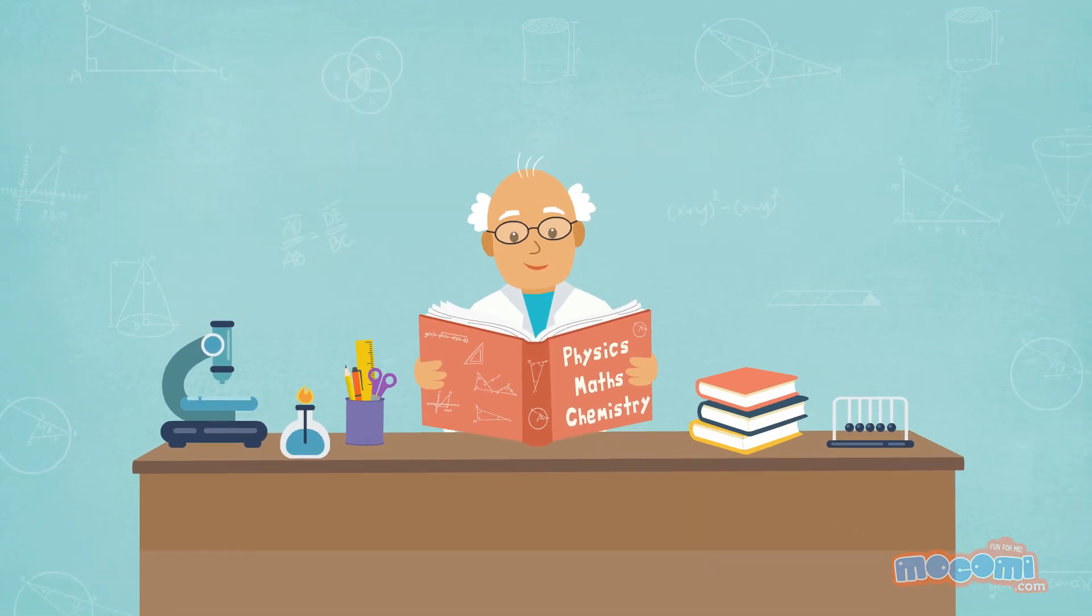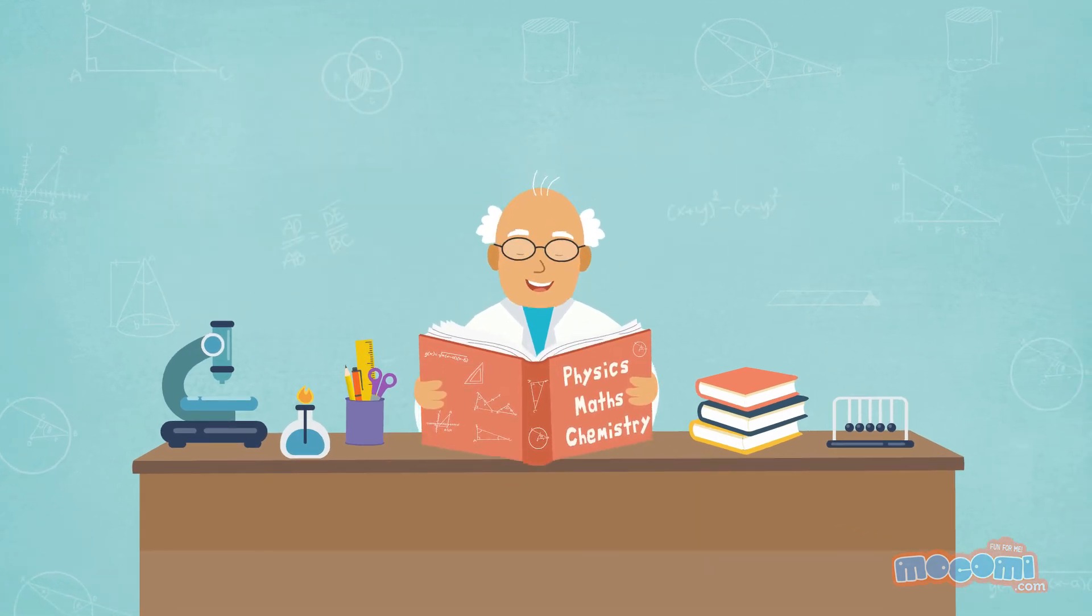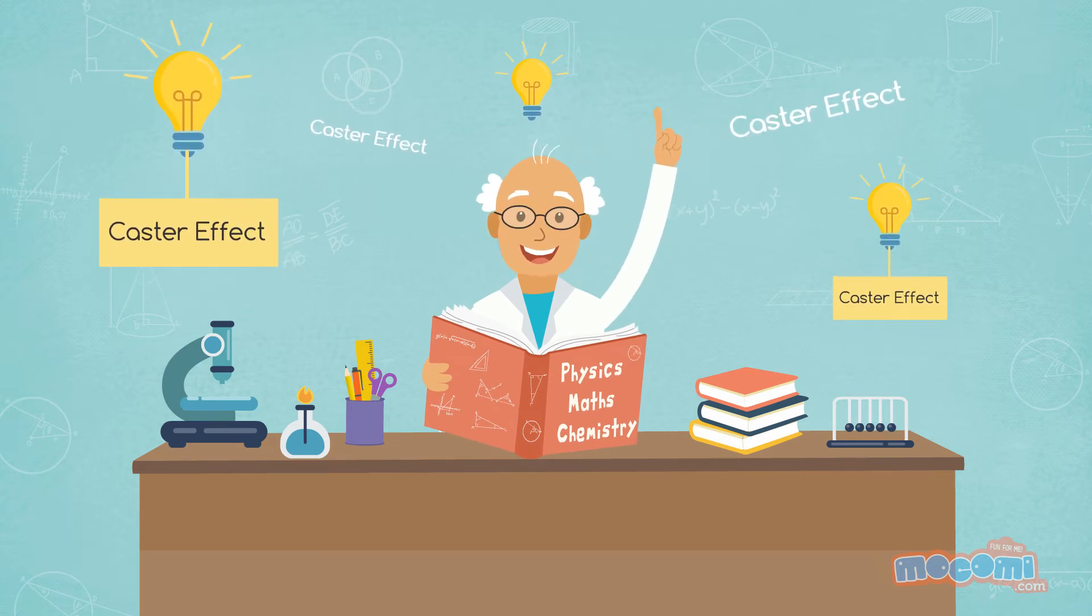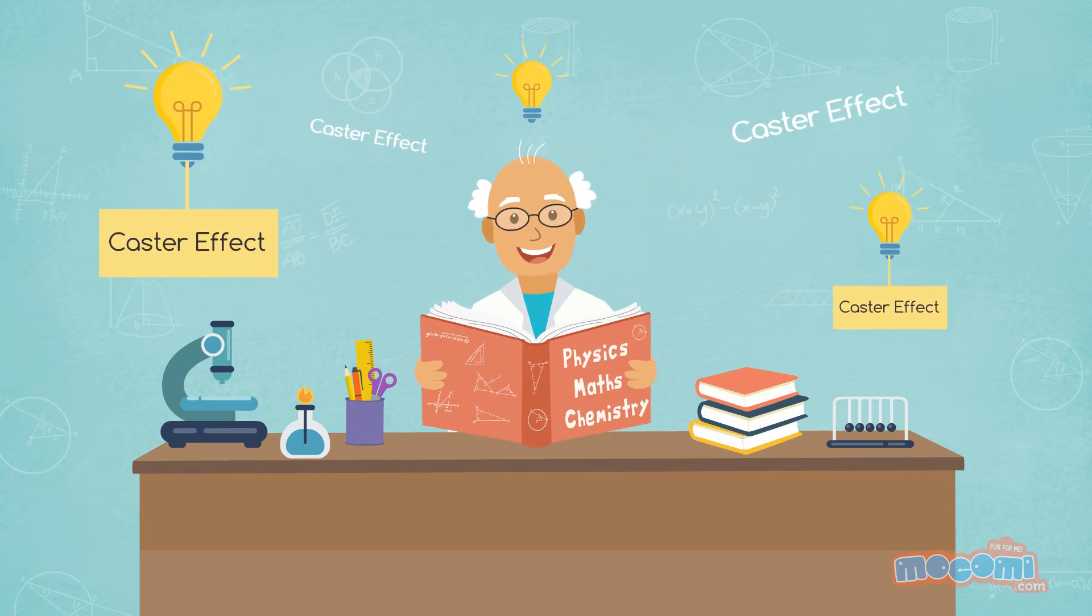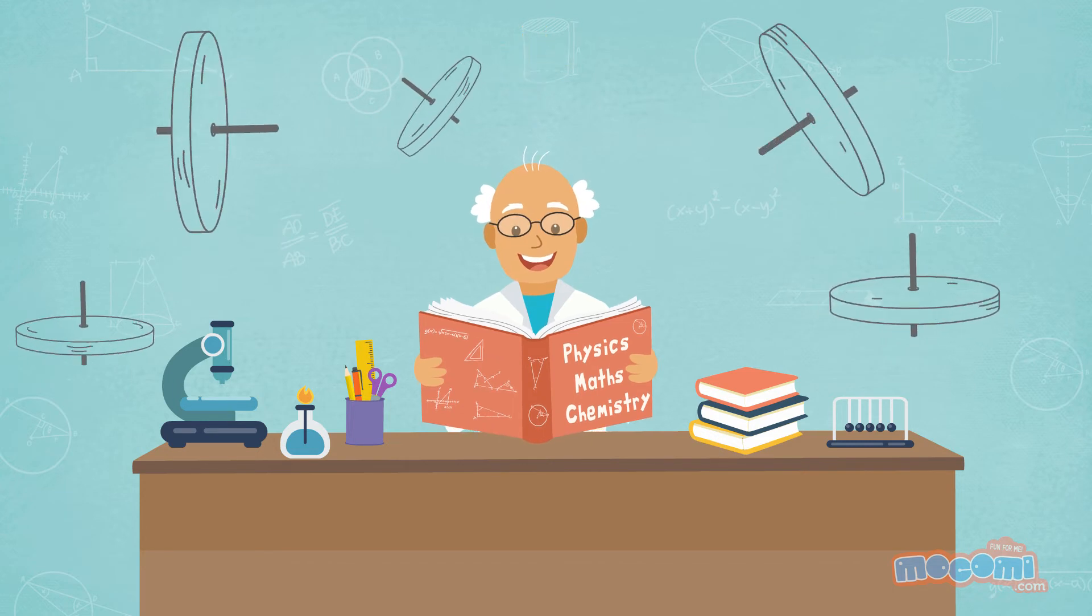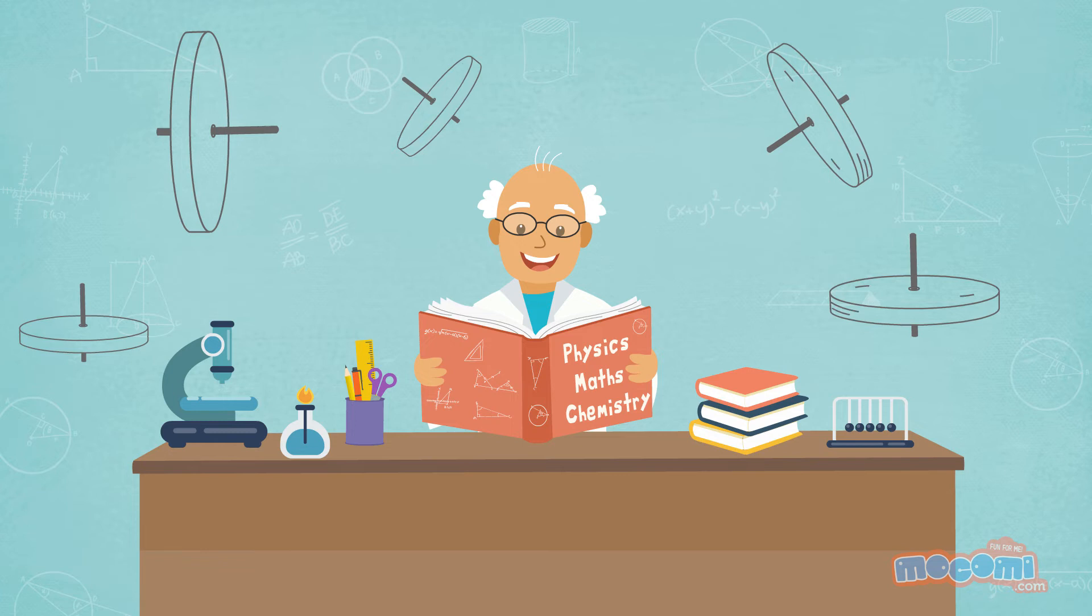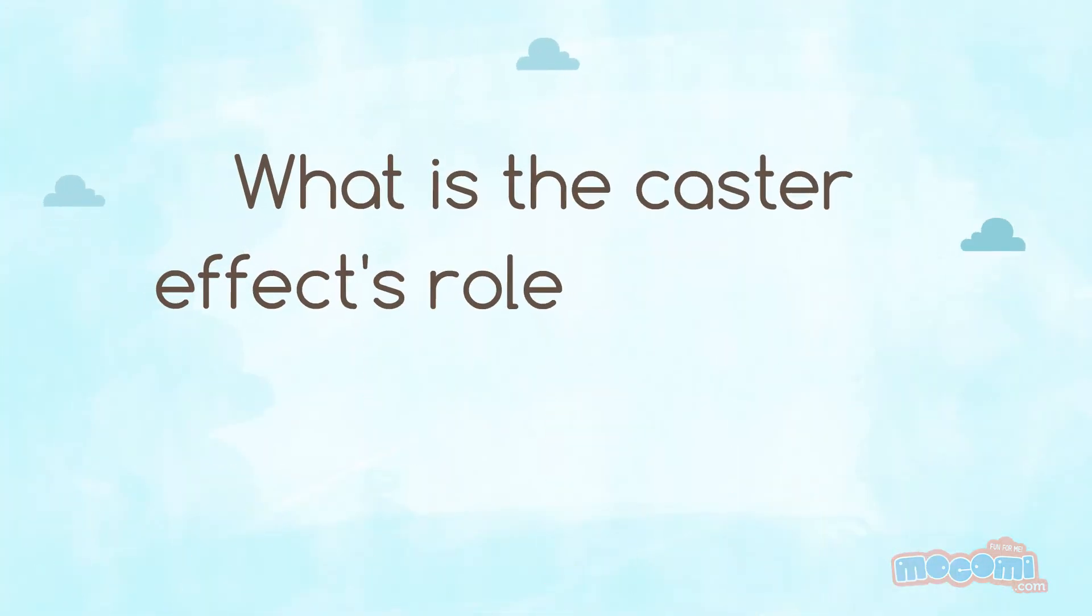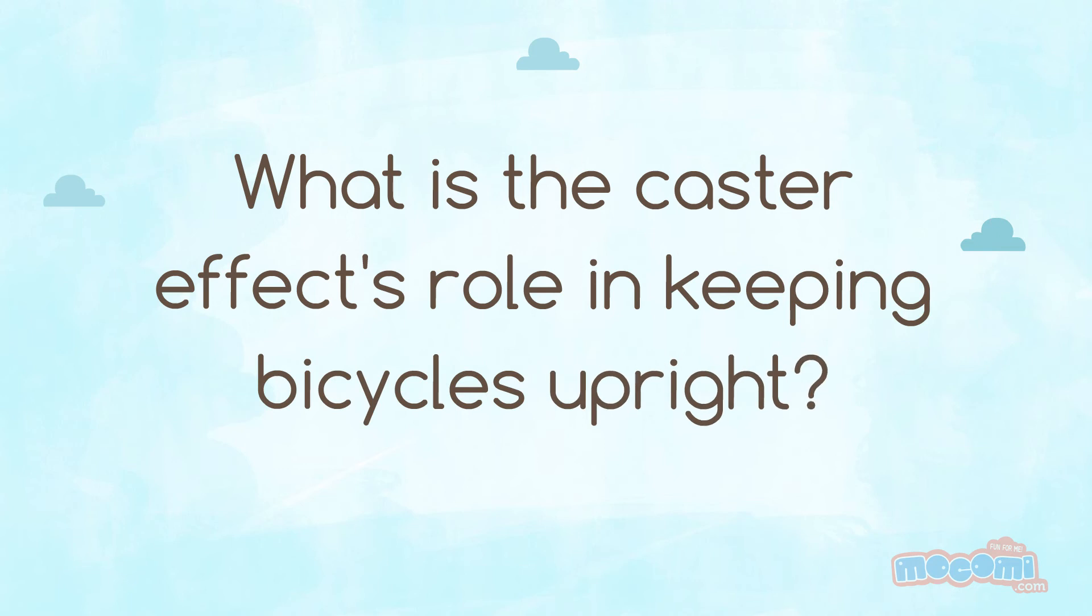So they assumed it must be the caster effect of the wheels because the bicycle wheels are attached to a center axis on a frame to help them rotate. What is the caster effect's role in keeping bicycles upright?